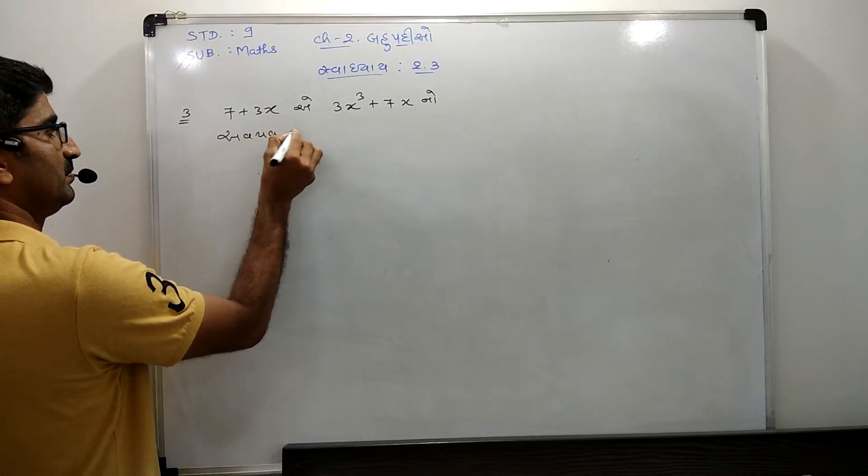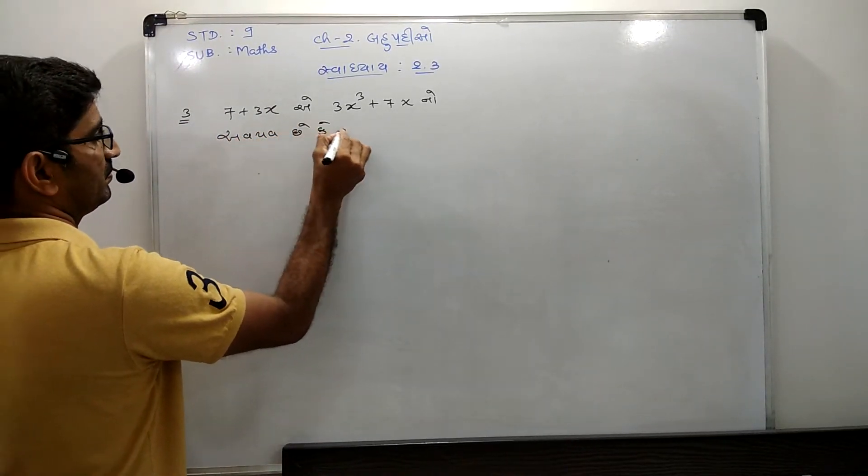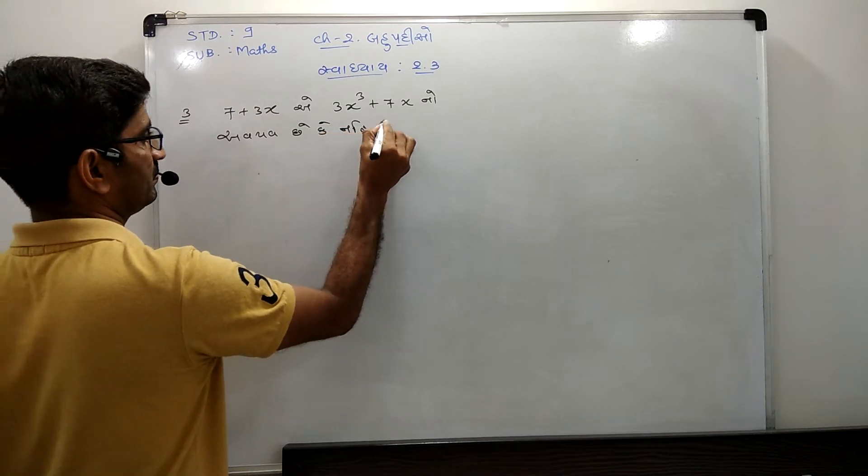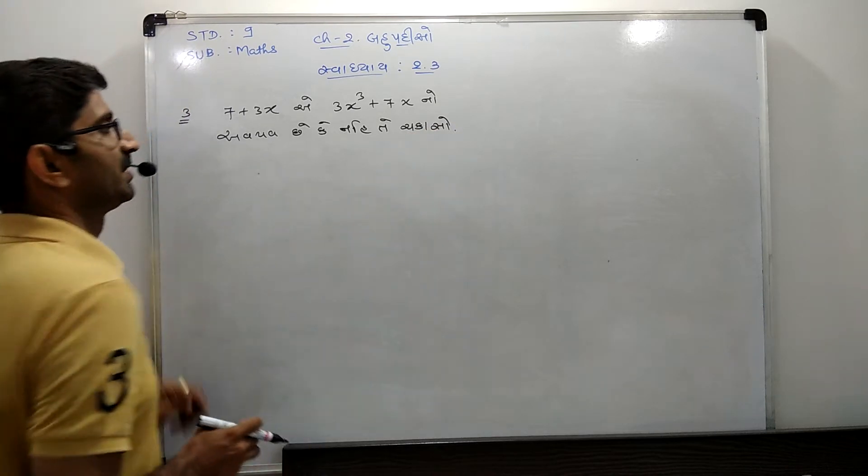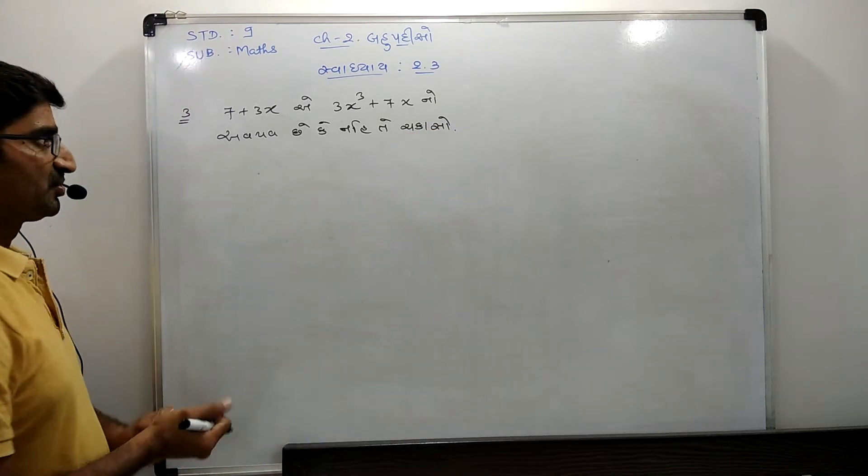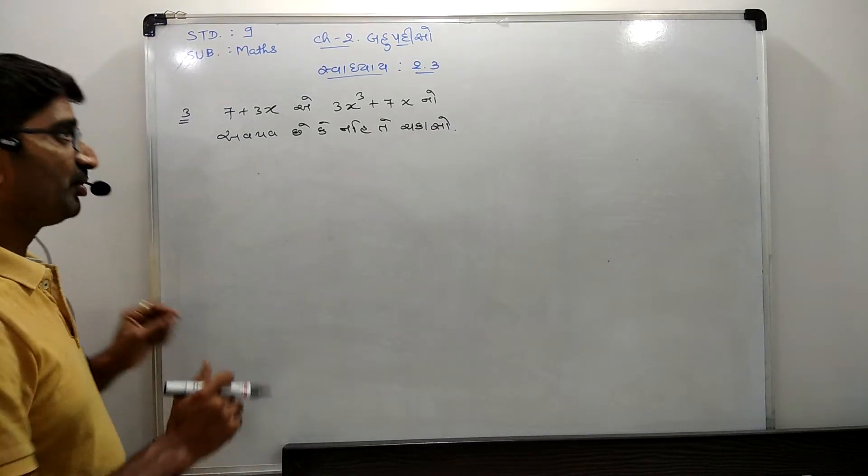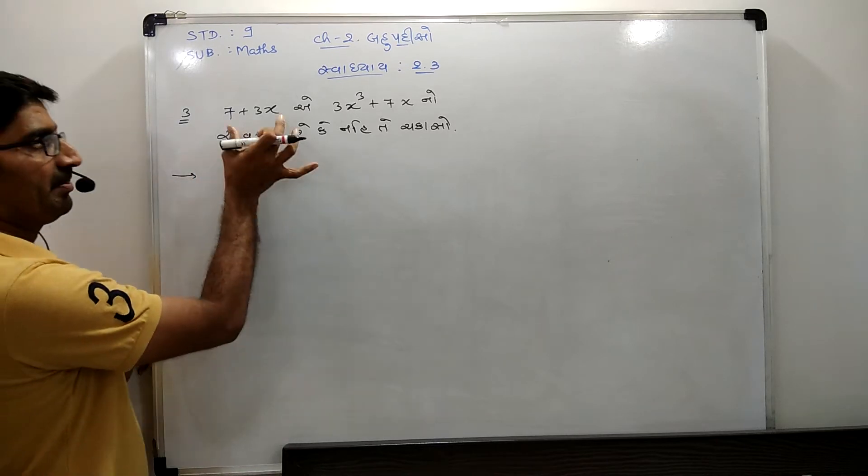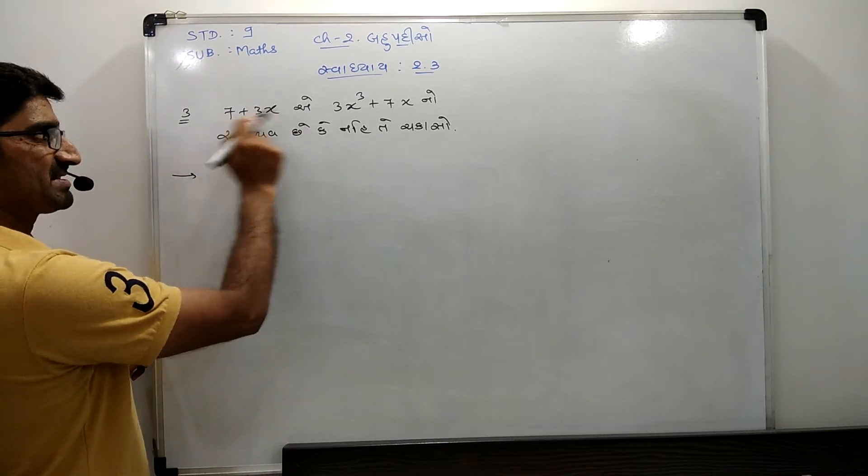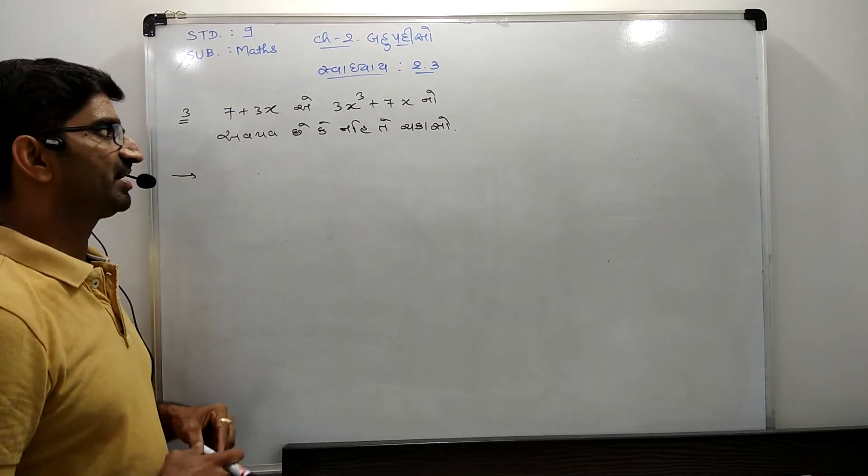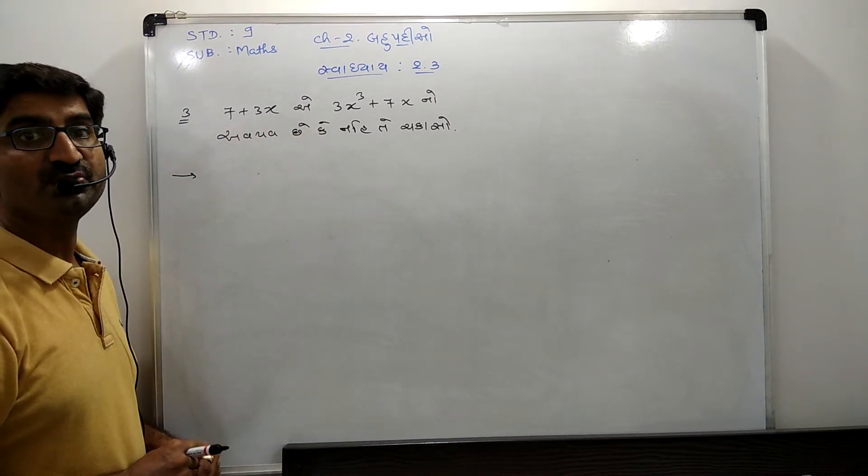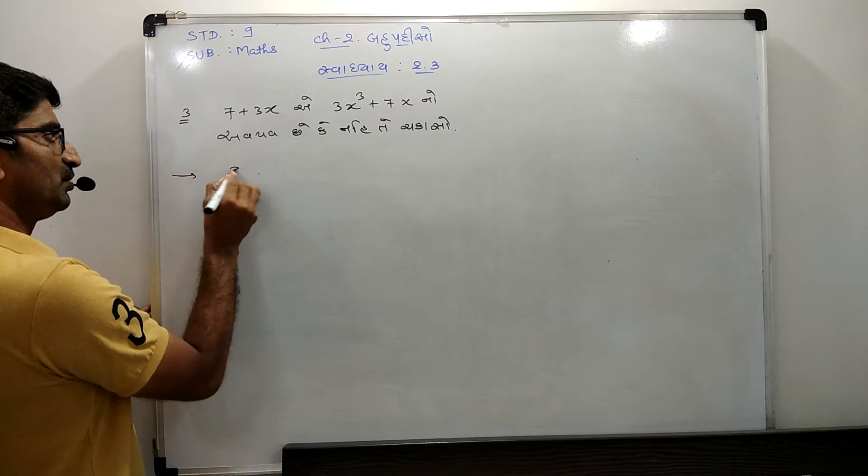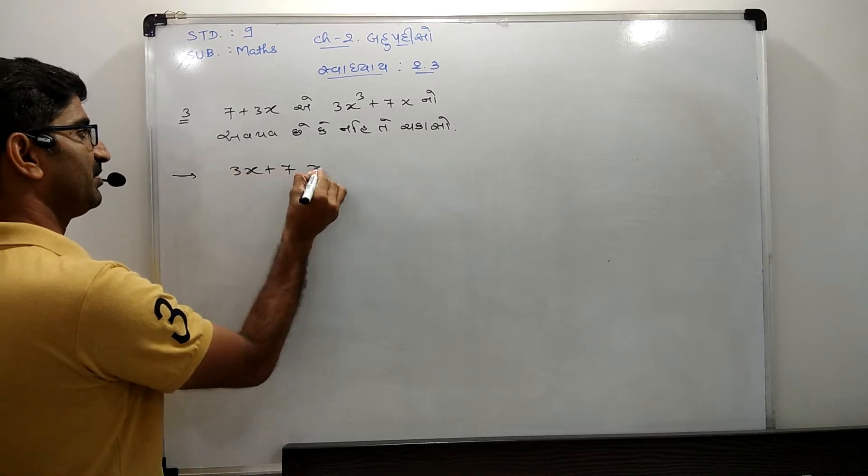Let me show you this problem: 3x plus 7. We will see that 3x plus 7 is equal to 6. So, 3x plus 7 is equal to 6.